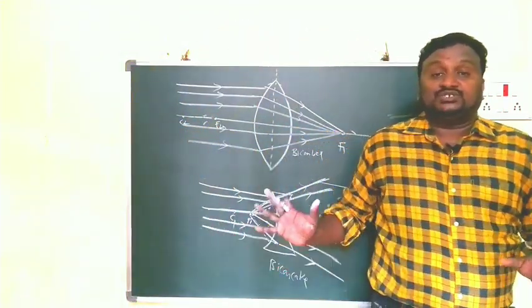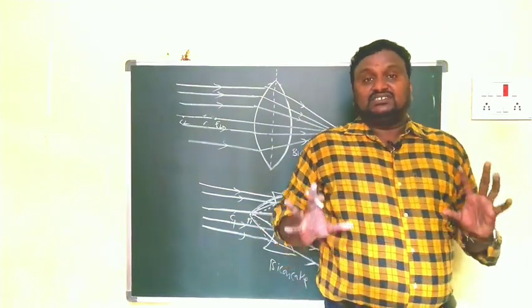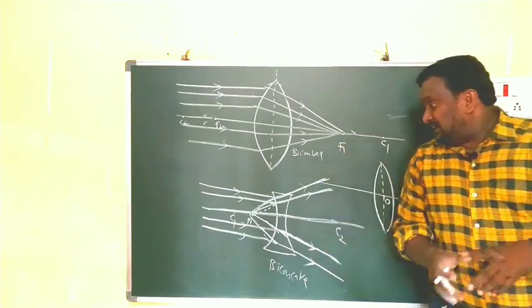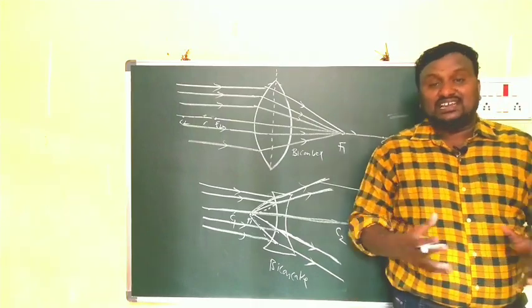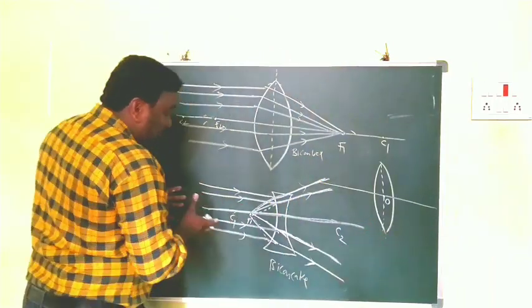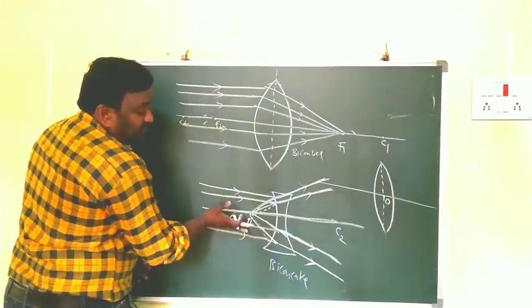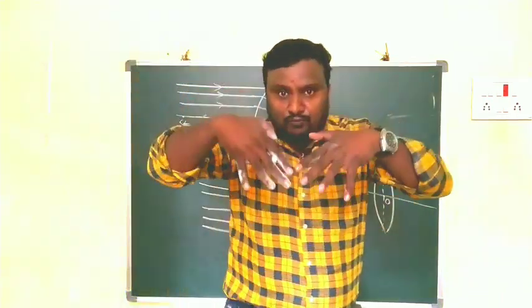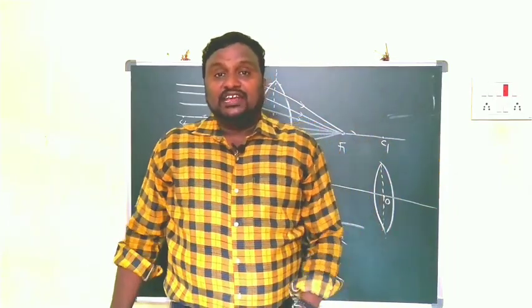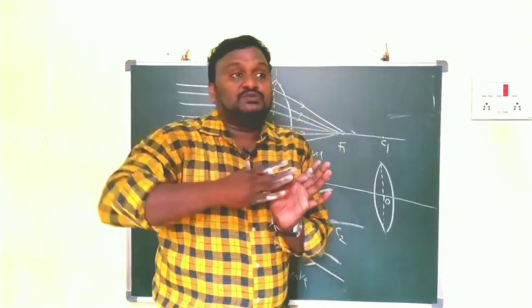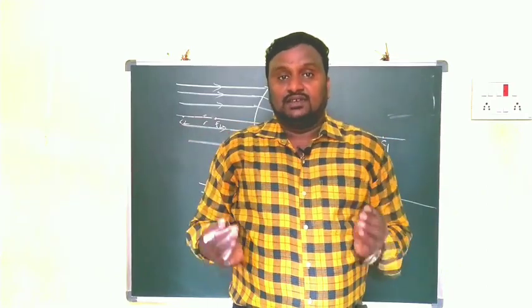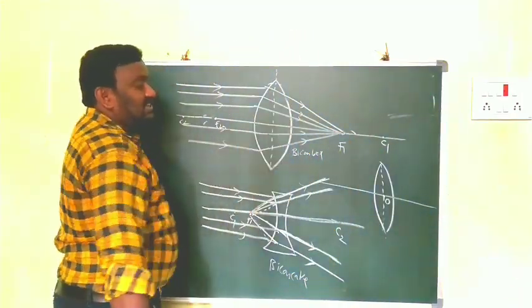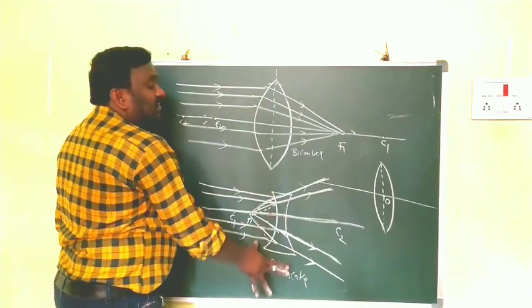By observing these two diagrams, you get one conclusion. The convex lens acts as a converging lens because refracted rays meet at one point. The concave lens acts as a diverging lens because after incidence the light rays separate and diverge. Converging means meeting at one point; diverging means separating.